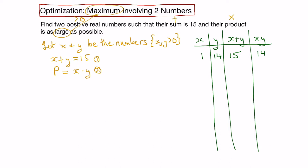We can keep going. If x is 2, y would have to be 13 so their sum is 15, and their product in this case would be 26. With x equals 3, y would be 12, their sum is 15, and the product would be 36. We can see here that our product is increasing.